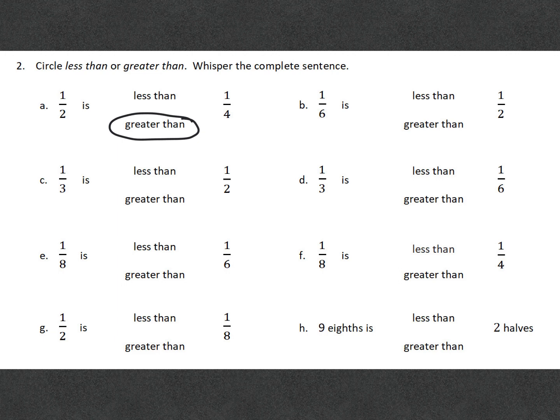Number B, one sixth is less than one half because one sixth is a smaller amount of a fraction than one half. C, one third is less than one half because one half is bigger than one third. D, one third is greater than one sixth because when you divide the whole into three pieces, each piece is going to be bigger than if you divide the whole into six pieces.